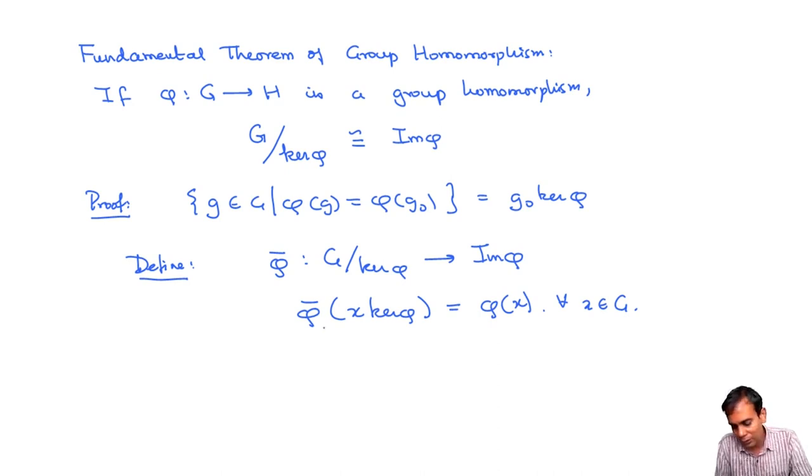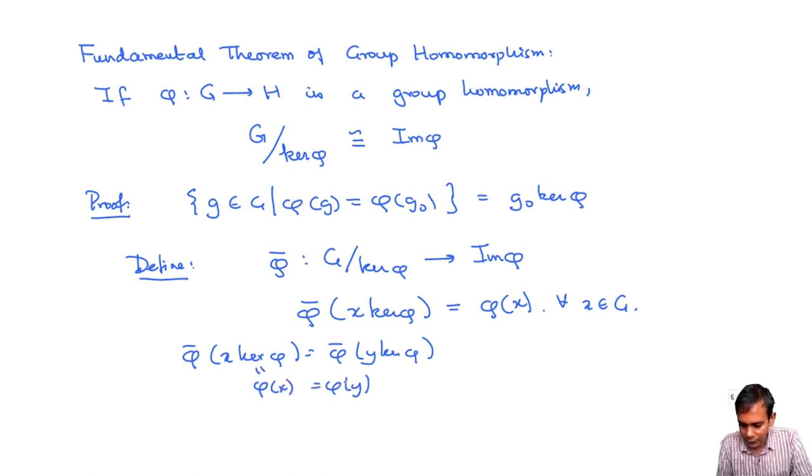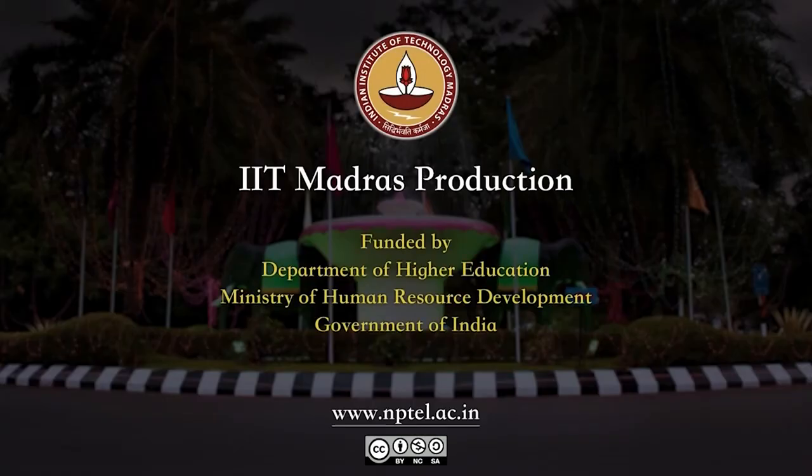It's also injective because if phi bar x kernel phi is equal to phi bar y kernel phi, then this means that phi x is equal to phi y which means that x is in the y coset of kernel phi and y is in the x coset of kernel phi. They are the same coset of kernel phi. So this map is injective and this map is clearly surjective because any element in the image of phi will be in the image of phi bar just by the definition of phi bar. All we need to check is that this map is a group homomorphism but that again is completely clear from the definition of the group structure on G mod kernel phi.